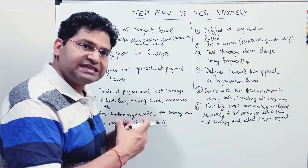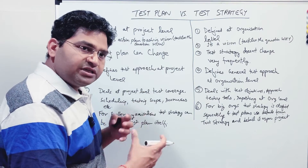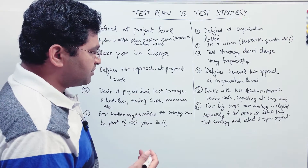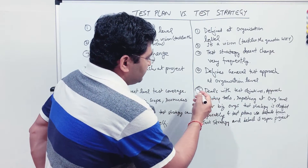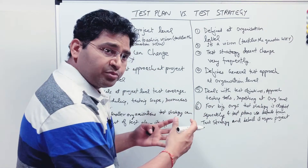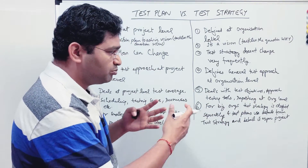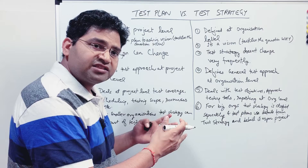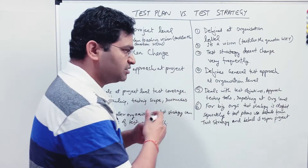All that detailed scheduling goes into the test plan. When we talk about the test strategy, it deals with test objectives, the general test approach, what testing tools to use, reporting, and artifacts that need to be produced at the organization level.